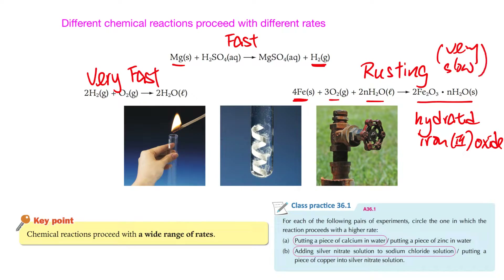So you see that from a chemical equation alone, we cannot tell the rate of reaction — how fast or how slow it will be. Therefore in this chapter we mainly learn how to find out the rate of reactions through doing experiments. Chemical reactions occur across a wide range of rates — some will be fast, some will be slow.